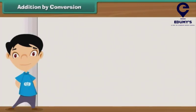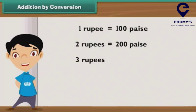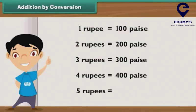Addition by conversion. You are aware that 1 rupee is equal to 100 paisae. It means 2 rupees are equal to 200 paisae, 3 rupees are equal to 300 paisae, 4 rupees are equal to 400 paisae, and 5 rupees are equal to 500 paisae.